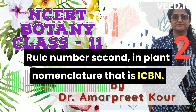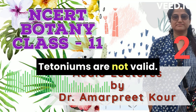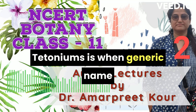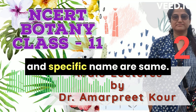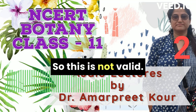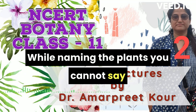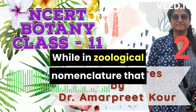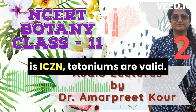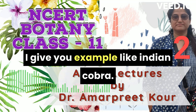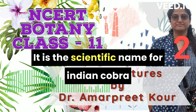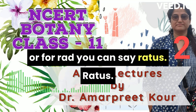Rule number two: in plant nomenclature, that is ICBN, tautonyms are not valid. A tautonym is when the generic name and specific name are the same. So this is not valid while naming plants — you cannot say Juglan regia as Juglan juglan. While in zoological nomenclature, that is ICZN, tautonyms are valid. For example, Indian cobra can be called Naja naja, or for rat, you can say Rattus rattus.